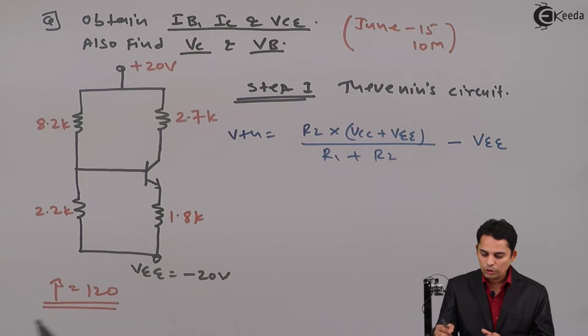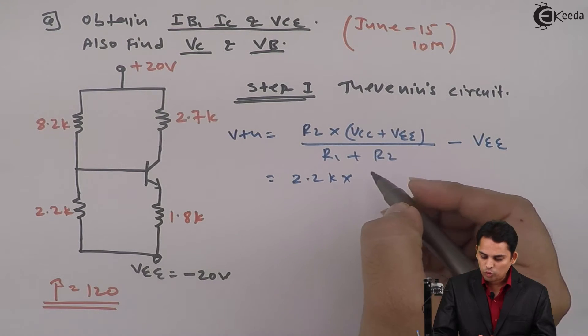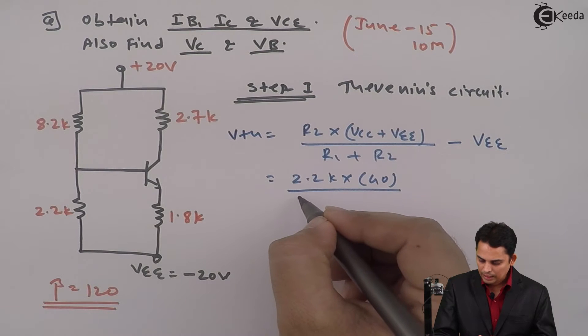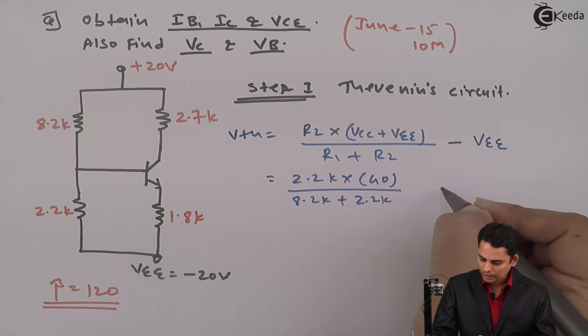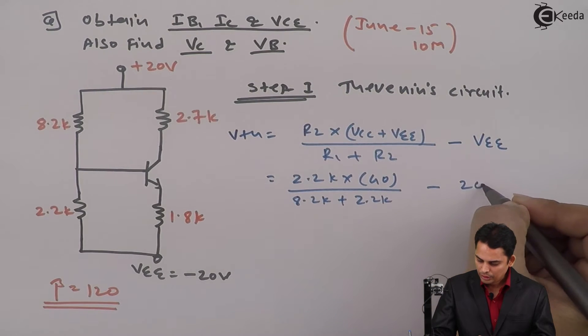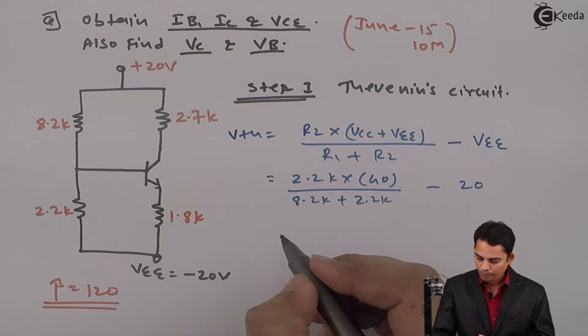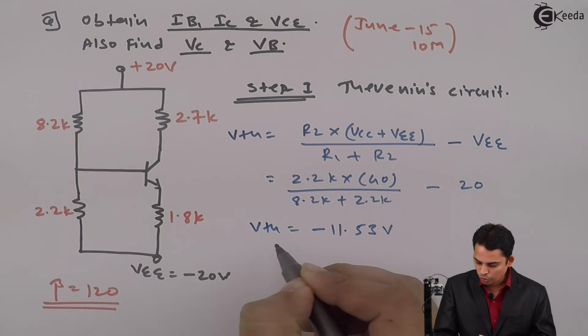Now apply the values where R2 is nothing but 2.2 kilo ohms. VCC plus VEE is nothing but 40 divided by 8.2K plus 2.2K minus 20 volts. The value of Vth will be minus 11.53 volts.